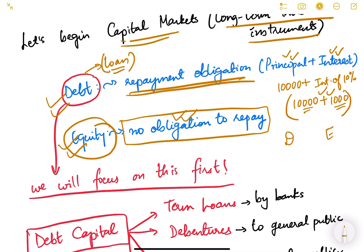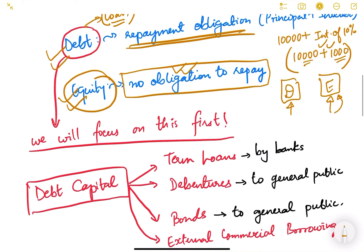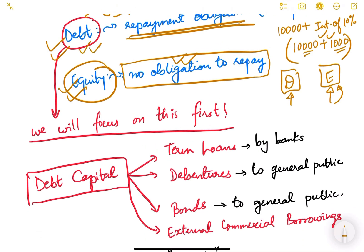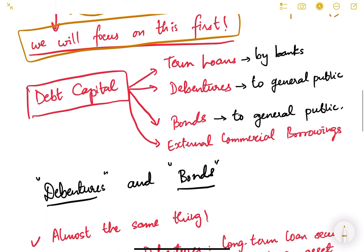In equity investments there is no such obligation to repay. In debt it is a kind of loan you give to the issuer. In equity you also give money to the issuer, but you become a kind of partner — whatever percentage holding you have, you become a partner in that company to that extent. That is the simple meaning of equity. Let us focus on debt first.